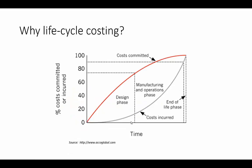So why is life cycle costing important? Let's take time to look at this graph. The x-axis shows the time from the beginning to the end of the product's life cycle, and the y-axis reflects the percentage of costs committed or incurred over the whole life cycle. In terms of time, there's the design phase, then the manufacturing and operations phase, and finally the end of life. The grey line shows costs that have been incurred — most costs are actually incurred during the manufacturing and operations phases. This is where management accountants get involved using budgeting, activity-based costing, variance analysis and other tools to control these costs.